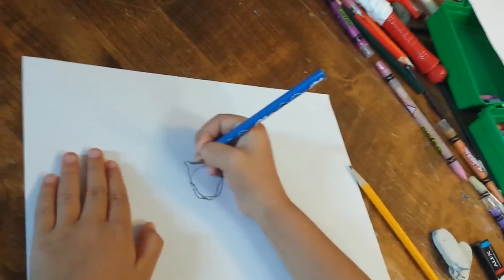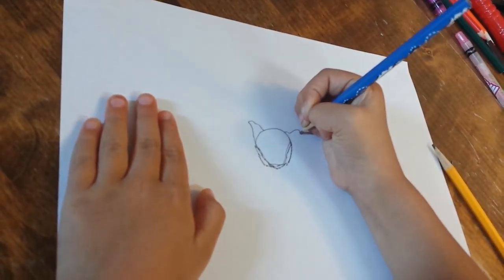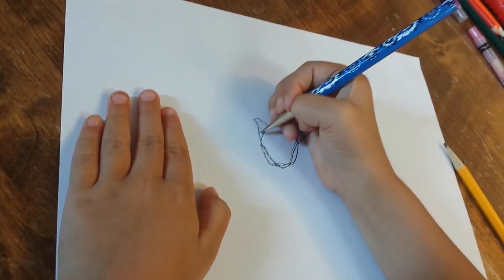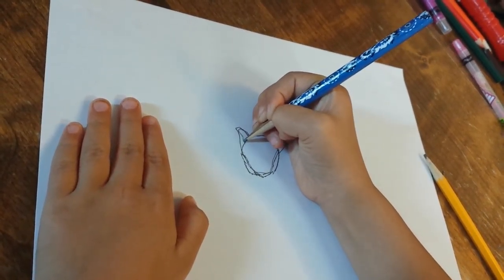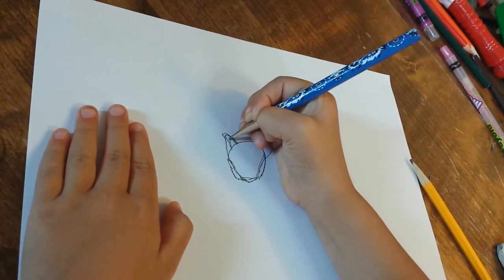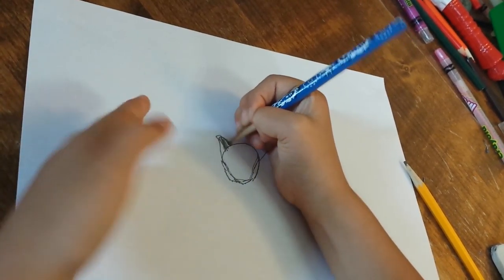Then you kind of do the same thing in the ear to make the extra fur in the tiger. The ears, you don't do a point at the ears, you kind of do a little squiggly and done a little loop.